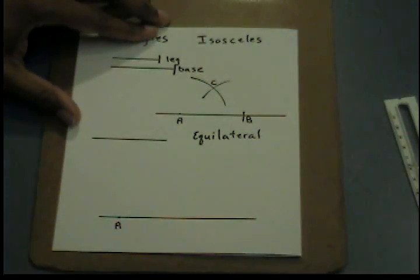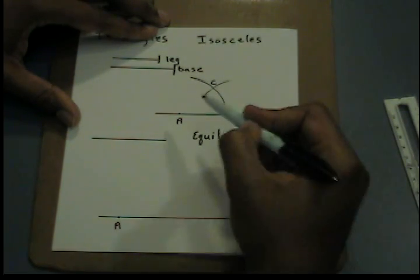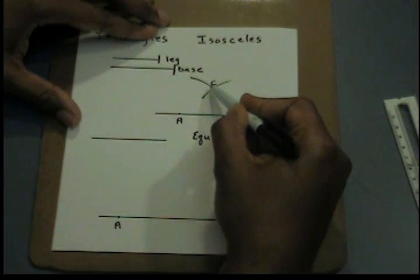That's my third vertex. I'm going to connect a point from A to C and from B to C.